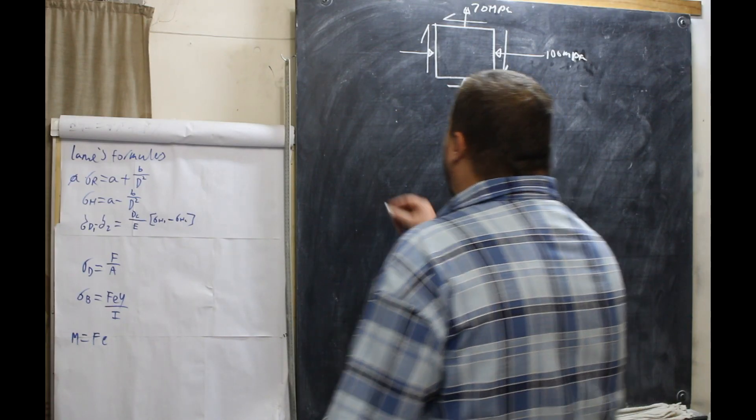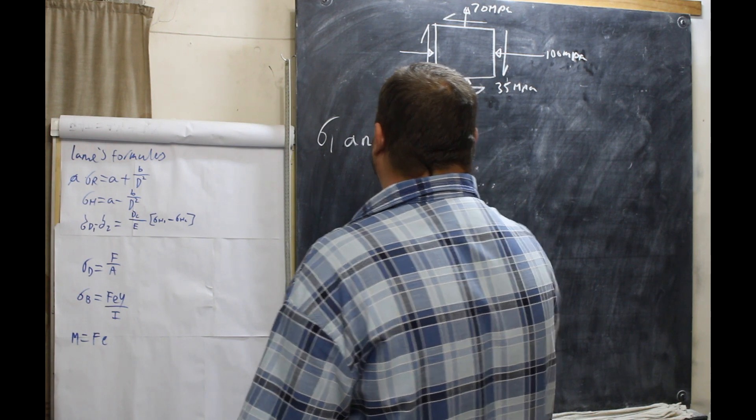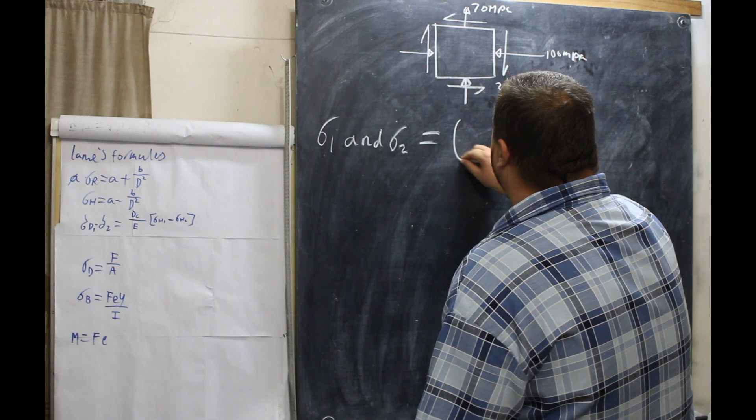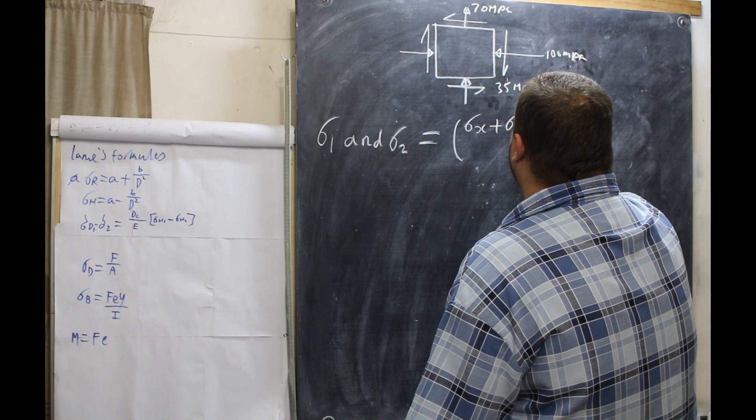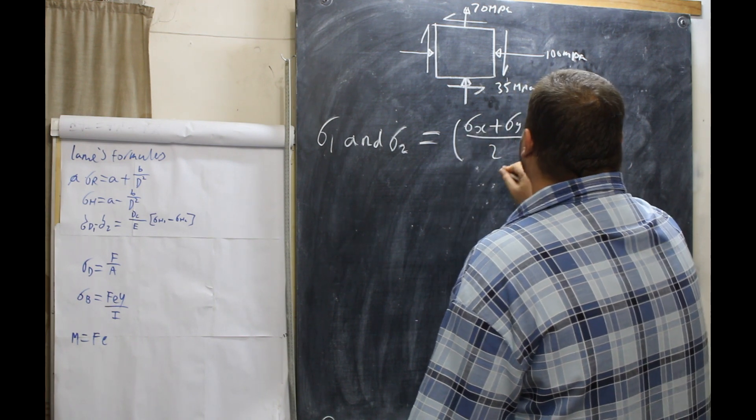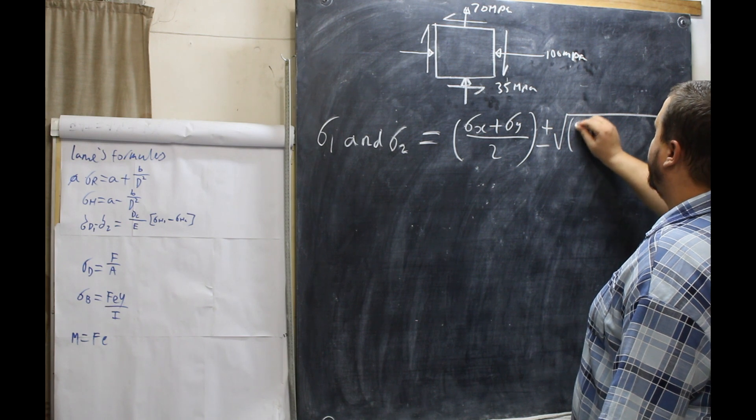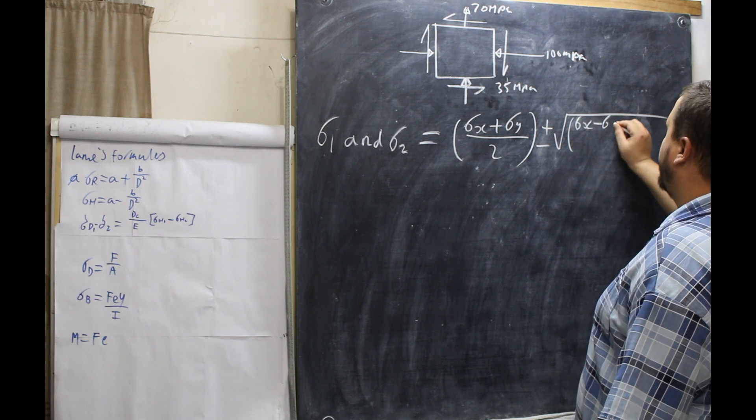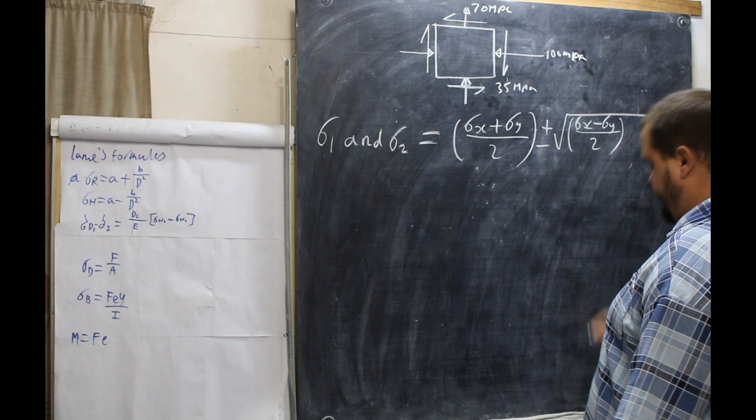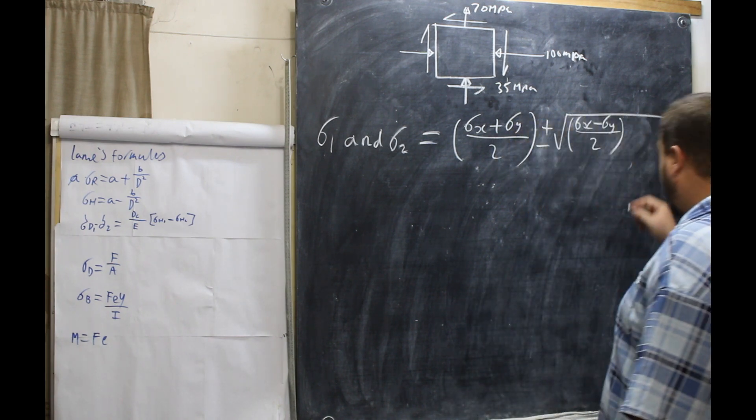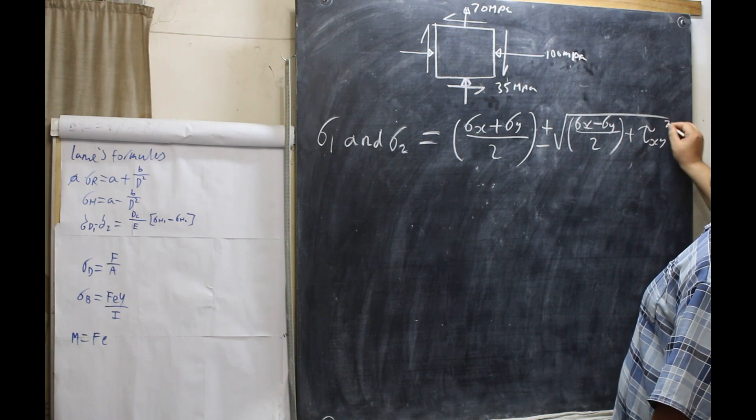First things first, we need to find stress 1 and stress 2. How we do that is σ1 and σ2 equals σx plus σy all over 2, plus minus the root of σx minus σy all over 2, plus the shear stress τxy, and both of these are squared.